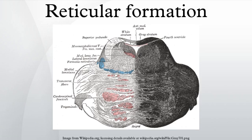The reticular formation are intermeshed neural networks throughout the brainstem, that are involved in multiple tasks such as regulating the cardiovascular system, breathing, sleep-wake cycle, and filtering incoming stimuli to discriminate irrelevant background stimuli. It is essential for governing some of the basic functions of higher organisms.